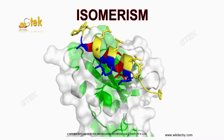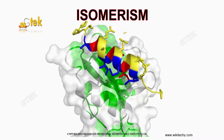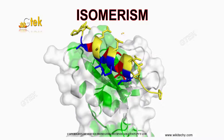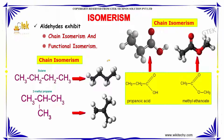Welcome to GTech-Technos Solutions Pvt Ltd. In this unit we will be discussing about the isomerism exhibited by carbonyl compounds. Talking about aldehydes, they exhibit two types of isomerism: firstly, chain isomerism and functional isomerism.